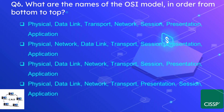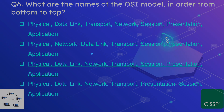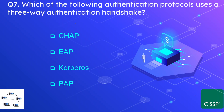Question number six: what are the names of the OSI model layers in order from bottom to top? The correct answer is: Physical, Data Link, Network, Transport, Session, Presentation, and Application.